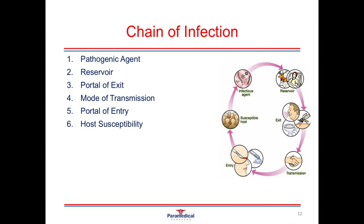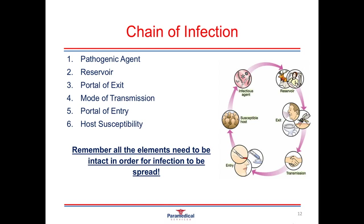Things that can affect host susceptibility include age — the very young, the very old, or debilitated individuals generally have a low immune system and low ability to fight infections. Those who are immunocompromised due to poor nutrition, poor health, drug abuse, alcohol abuse, or different types of medical conditions will naturally have a lower immune system and find it harder to fight off infectious agents. All of these elements need to be intact in order for infection to spread from one individual or source to another.